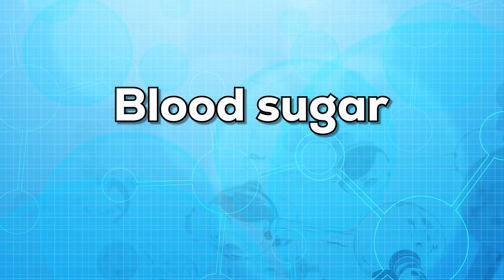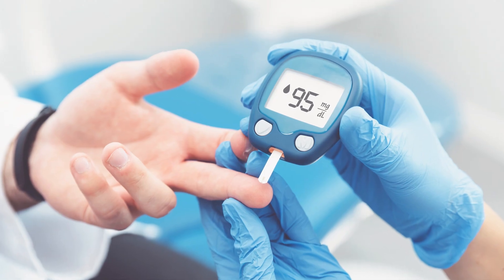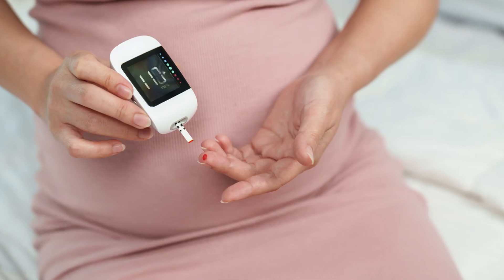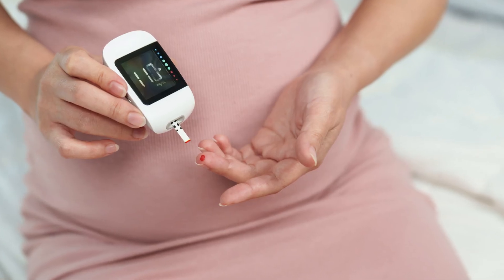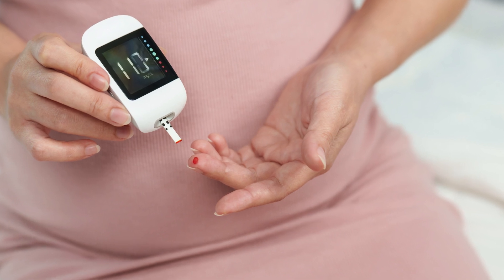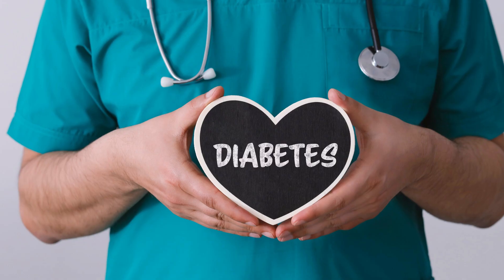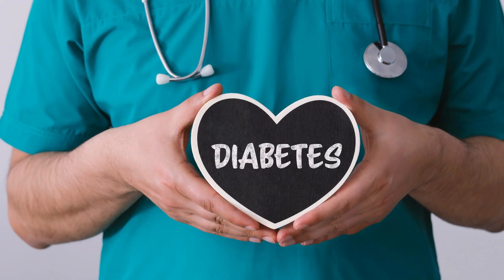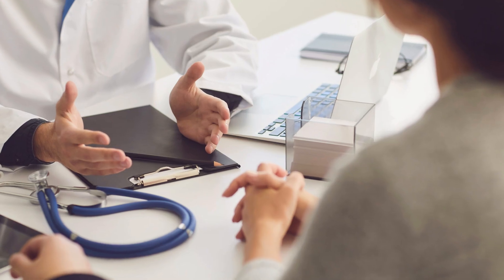The next test is blood sugar. High levels of blood sugar, that is diabetes, can complicate any pregnancy. It is highly advisable to keep your blood sugar normal during and before the pregnancy. Also, if you have a family history of diabetes, it's advisable to talk to your doctor before conceiving.